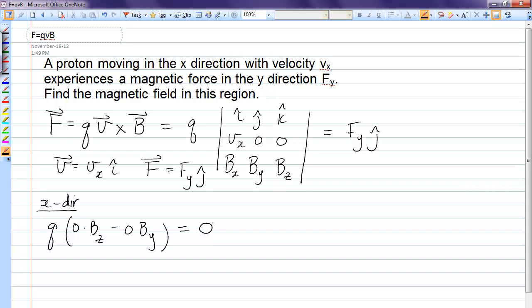That equation really doesn't help us much because Bz could be anything, By could be anything, and it's still going to give us 0. Let's go to the y direction. In the y direction, we have Q, and we have 0 times Bx minus Vx times Bz. And we know that that has to give us Fy.